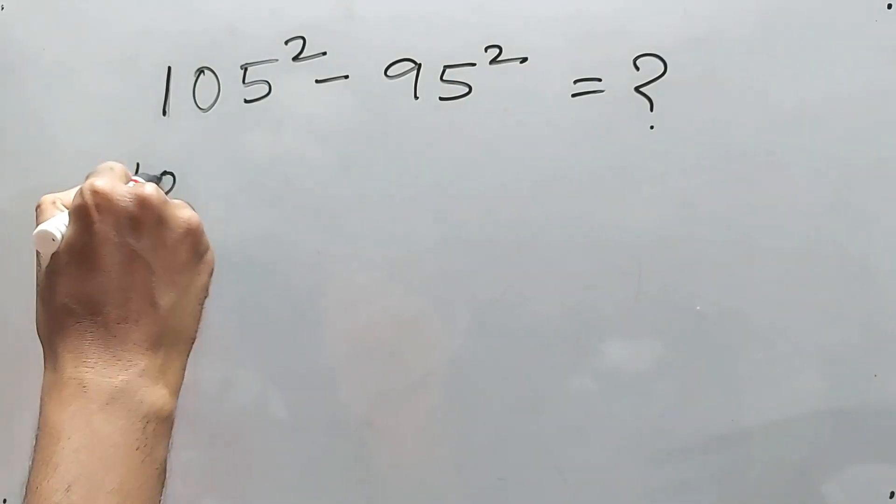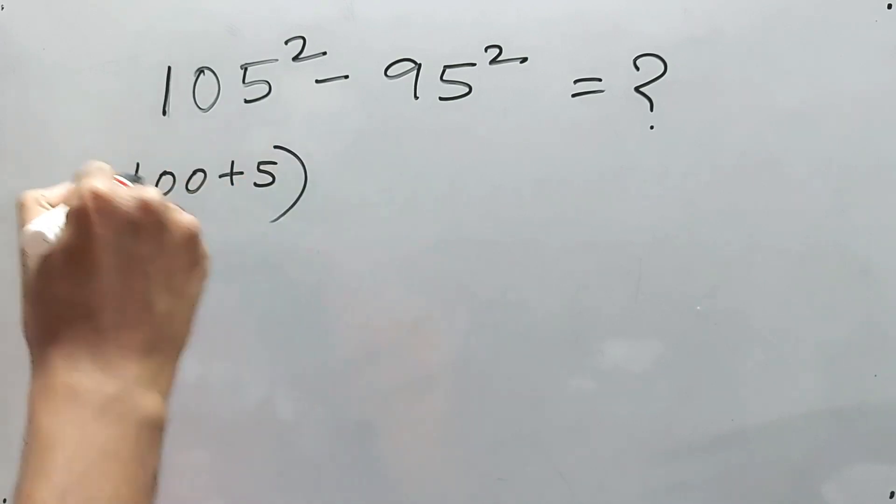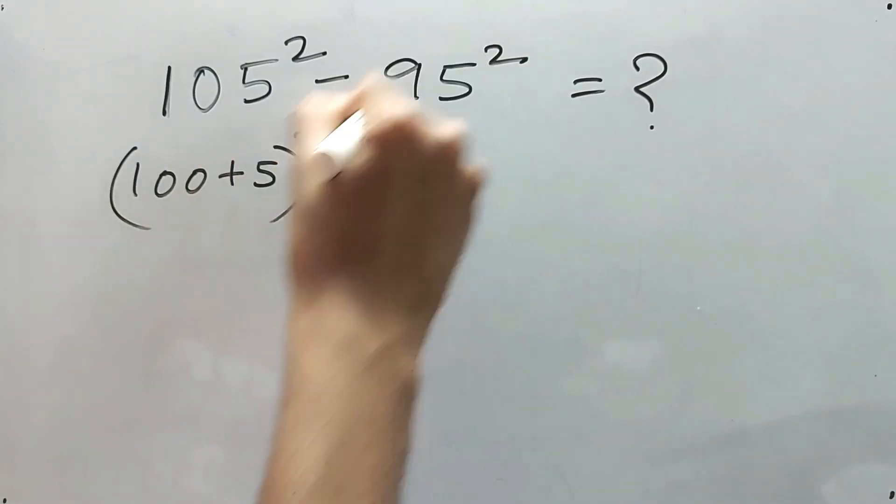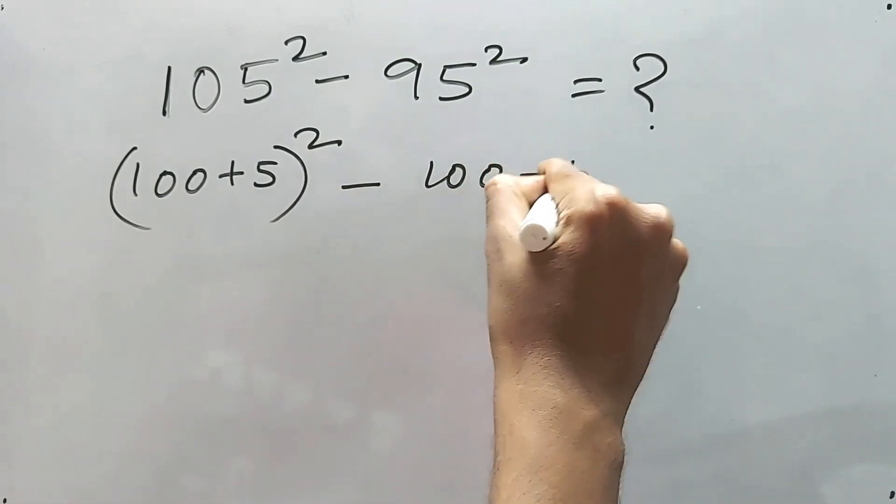105 means 100 plus 5, right? And 95 is 100 minus 5.